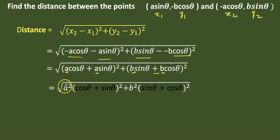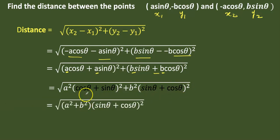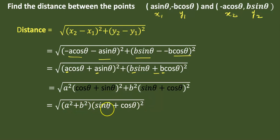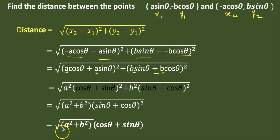So we take the square root of A squared into cos theta plus sin theta the whole square, plus B squared into sin theta plus cos theta the whole square. Since cos theta plus sin theta the whole square is common to both terms, we take it as a common factor, giving square root of A squared plus B squared into sin theta plus cos theta the whole square. This equals square root of A squared plus B squared, multiplied by cos theta plus sin theta.